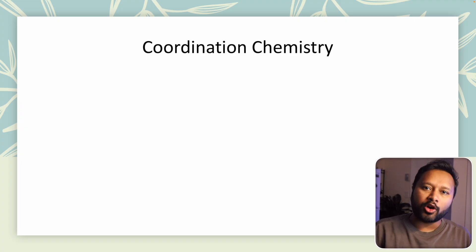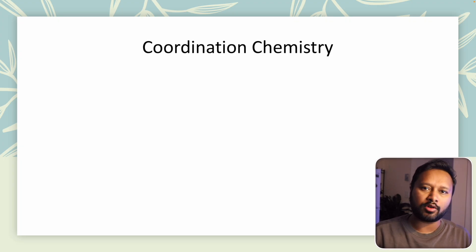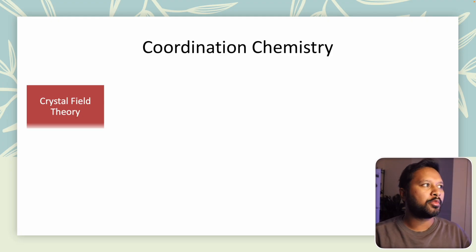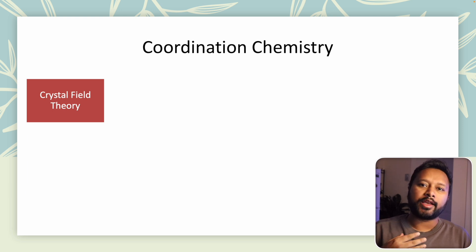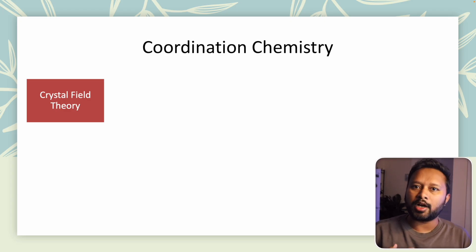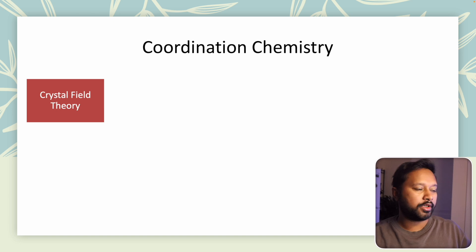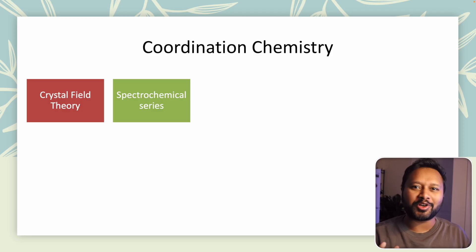The first major topic is coordination chemistry, which covers almost 30 to 40 percent of the inorganic chemistry syllabus. Starting with crystal field theory — you should not only know the theory but also how to solve related questions: how orbital splitting takes place in different geometries like octahedral, tetrahedral, square planar, and trigonal prism. You should understand the reason behind the splitting, the energy differences, and how to calculate delta-O, lambda-max, and other related parameters.